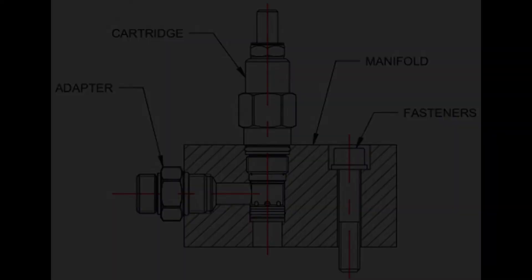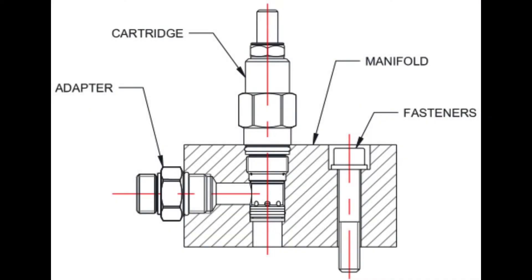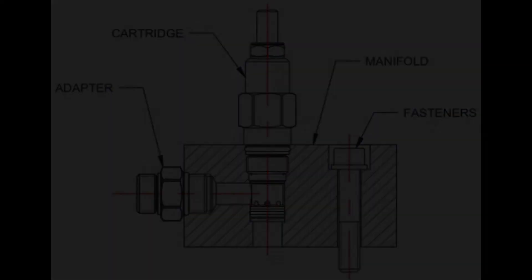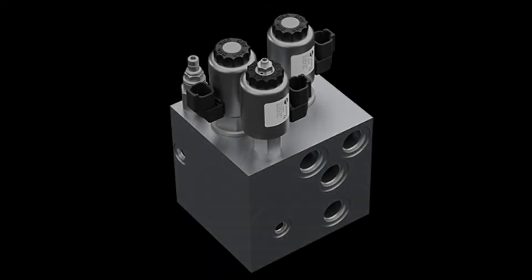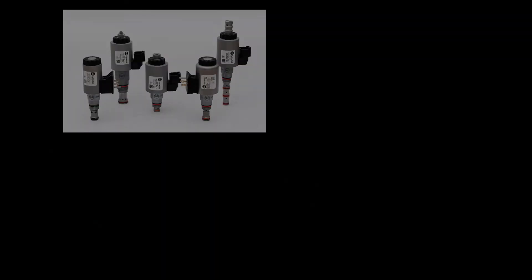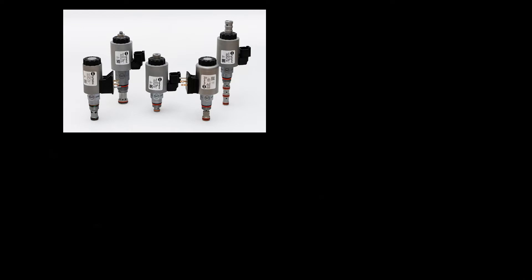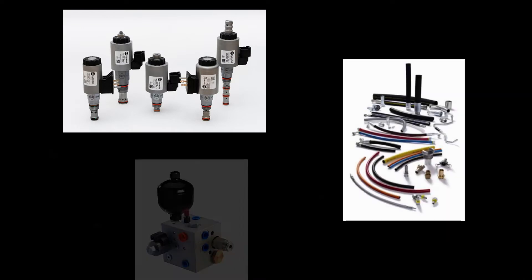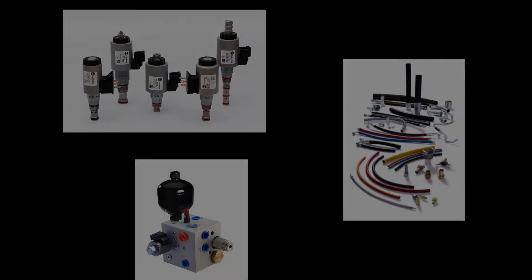The hydraulic manifold consists of a base plate that supports all necessary components and provides a place for mounting valves, fittings, etc., as well as ports for connection of cartridge valves, pipes, and other equipment.